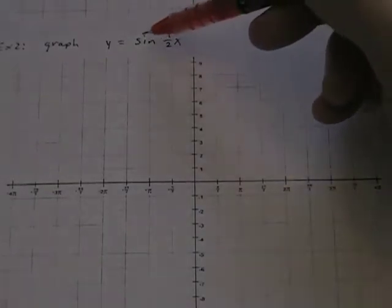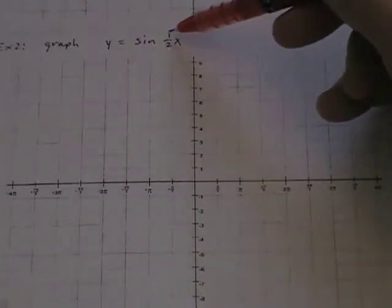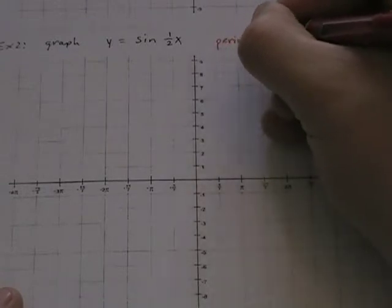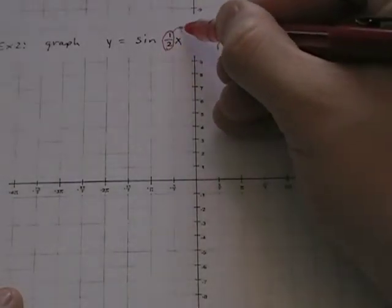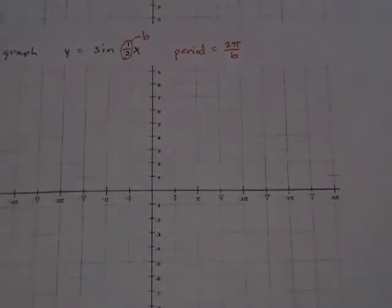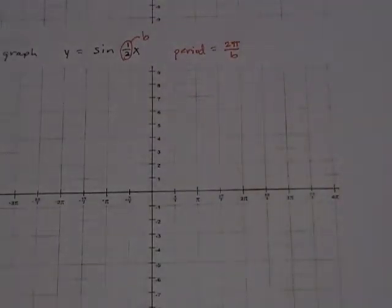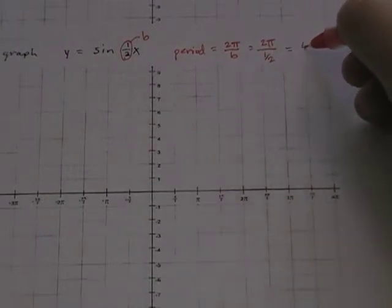In algebra, when you have something multiplied with x, it affects the horizontal. In trig, we get to cheat a little — the period of sine and cosine is always going to equal two pi over b, and this multiplier is b. So the period is two pi over b. If b were one, the period would be two pi over one, which is two pi. With b equal to one half, the period is two pi over one half, which is four pi.